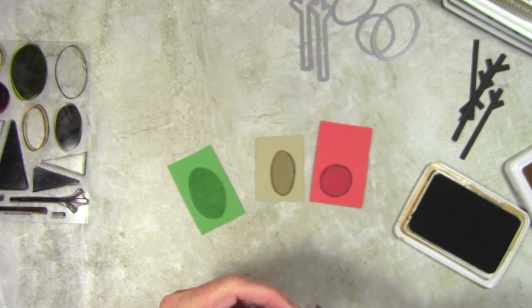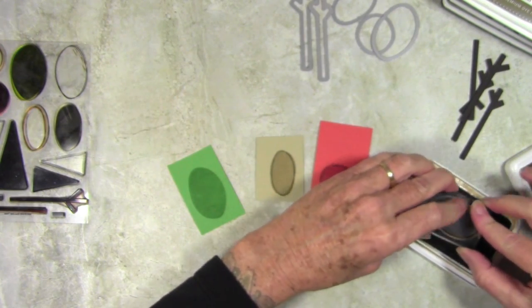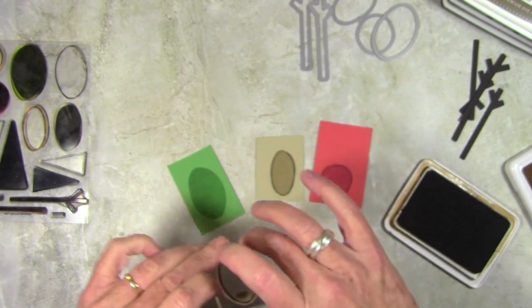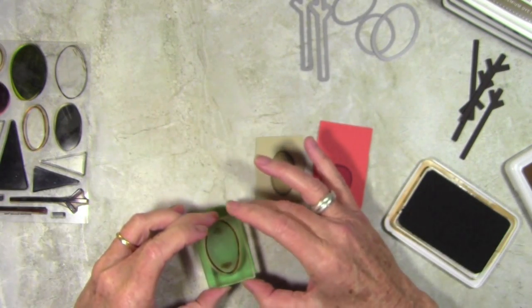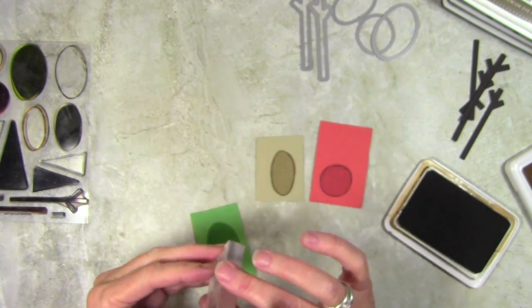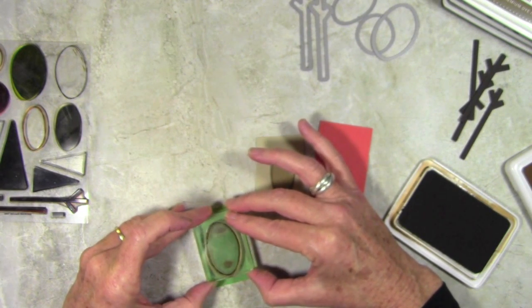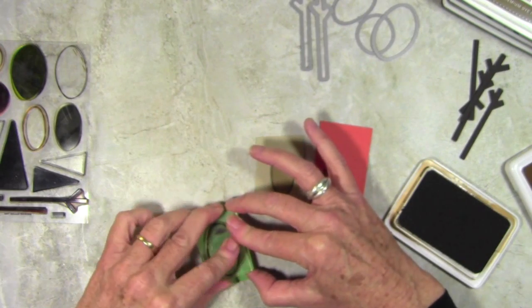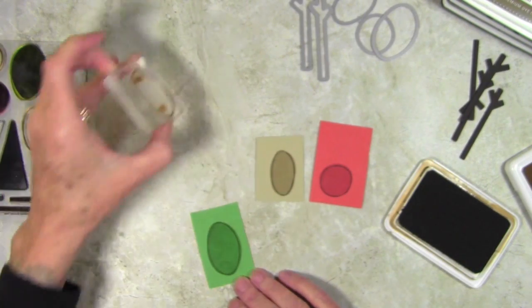As the Simon Says Stamp ink needs to settle into the paper, if I were to use another Simon Says Stamp ink on top, say a dark chocolate, it may pull that color in with the other color if I haven't given it enough time to settle. The Archival Ink, since it dries really quickly, will sit just right on top and it'll dry so fast that it won't have a chance to wick or bleed.